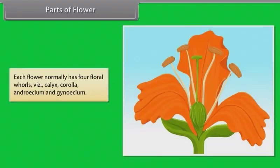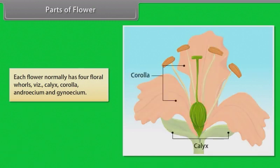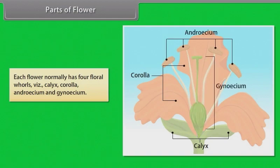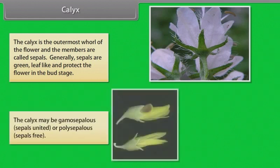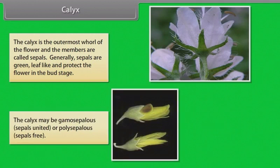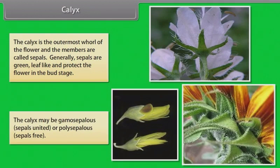Each flower normally has four floral whorls: calyx, corolla, androecium, and gynoecium. The calyx is the outermost whorl of the flower and the members are called sepals. Generally sepals are green, leaf-like, and protect the flower in the bud stage. The calyx may be gamosepalous (sepals united) or polysepalous (sepals free).